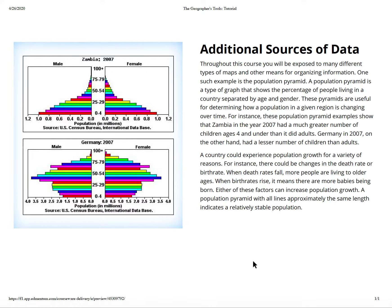Another example is the population pyramid, a type of graph that shows the percent of people living in a country separated by age and gender. These pyramids are useful for determining how a population in a given region is changing over time. For instance, Zambia in 2007 had a much greater number of children ages four and under than adults, while Germany in 2007 had fewer children than adults. A country could experience population growth due to changes in death rate or birth rate. When the death rate falls, more people are living to older ages; when birth rates rise, there are more babies being born. A population pyramid with all lines approximately the same length indicates a relatively stable population.